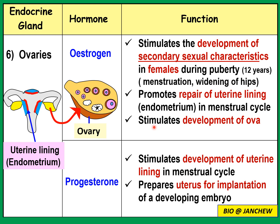Estrogen also stimulates the development of ova inside the ovary. Next, progesterone stimulates the development of the uterine lining in the menstrual cycle — similar to estrogen, but progesterone is secreted later in the menstrual cycle and carries on stimulating the development of the endometrium. When there is no fertilization and no embryo to attach to the endometrium, the endometrium breaks down. In this way, progesterone prepares the uterus for implantation of a developing embryo.